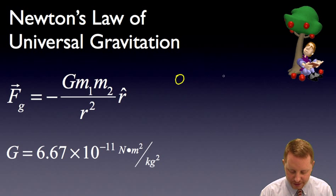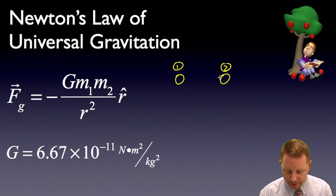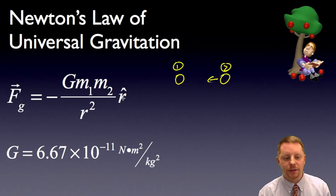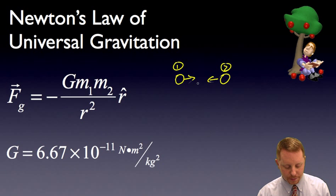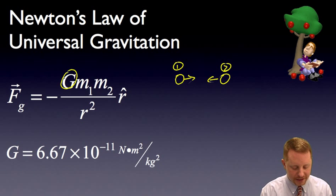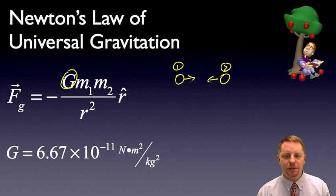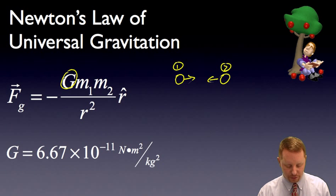So if we have one mass here and one mass there, the force of one on two pulls it toward it — that's why we have this negative r-hat, the direction of the vector between those two — and one feels a force toward two. They're attracted toward each other. Gravity always attracts, it never repels. And this constant, capital G, known as the universal gravitational constant, is 6.67 times 10 to the minus 11 newton meters squared per kilogram squared.